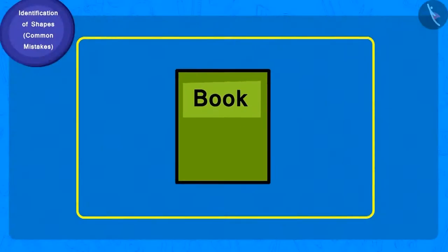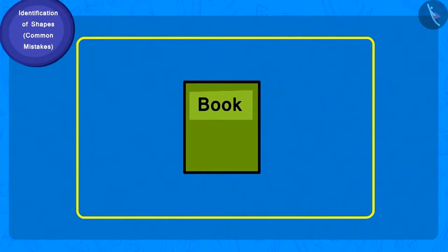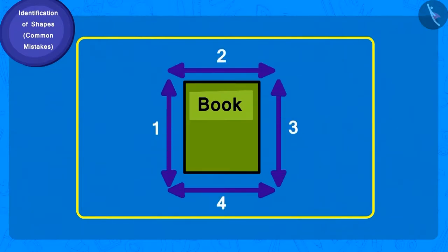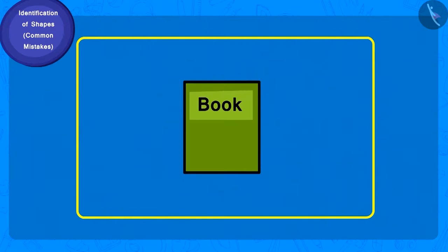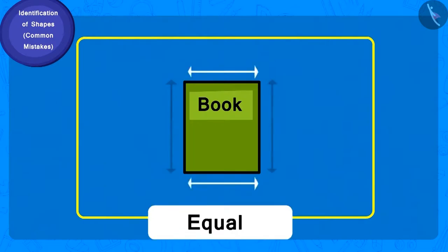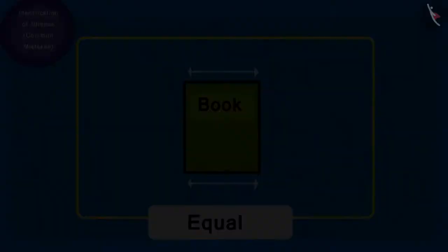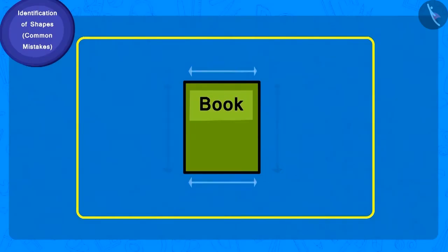Let us look at the book showed by Chacha. How many sides does the book have? And how many corners? Four. But, is the length of all the sides of the book equal? No. Only the length of the opposite sides is the same.